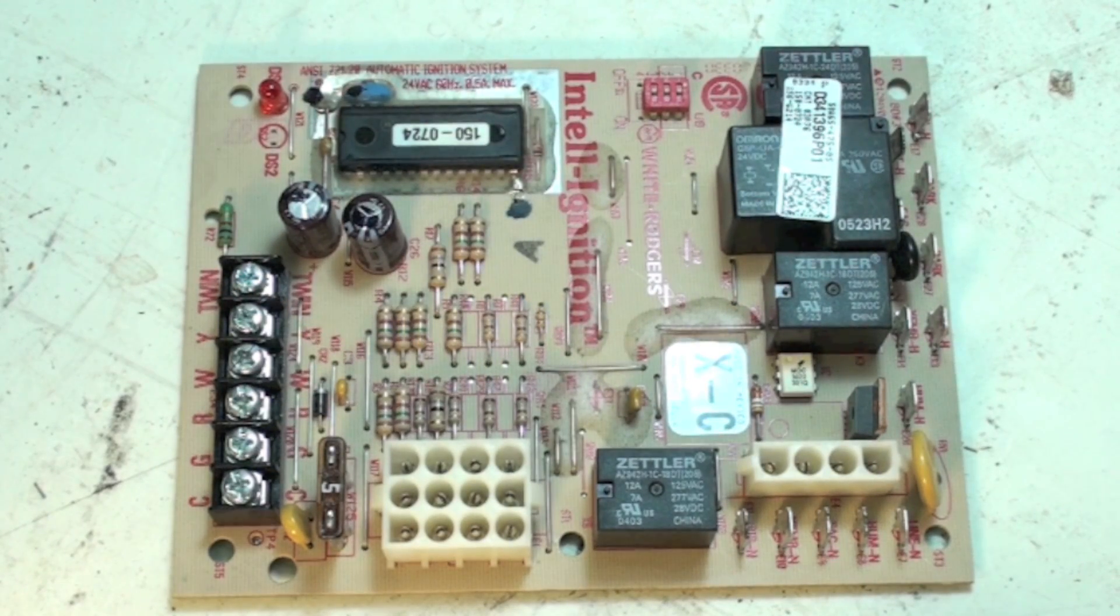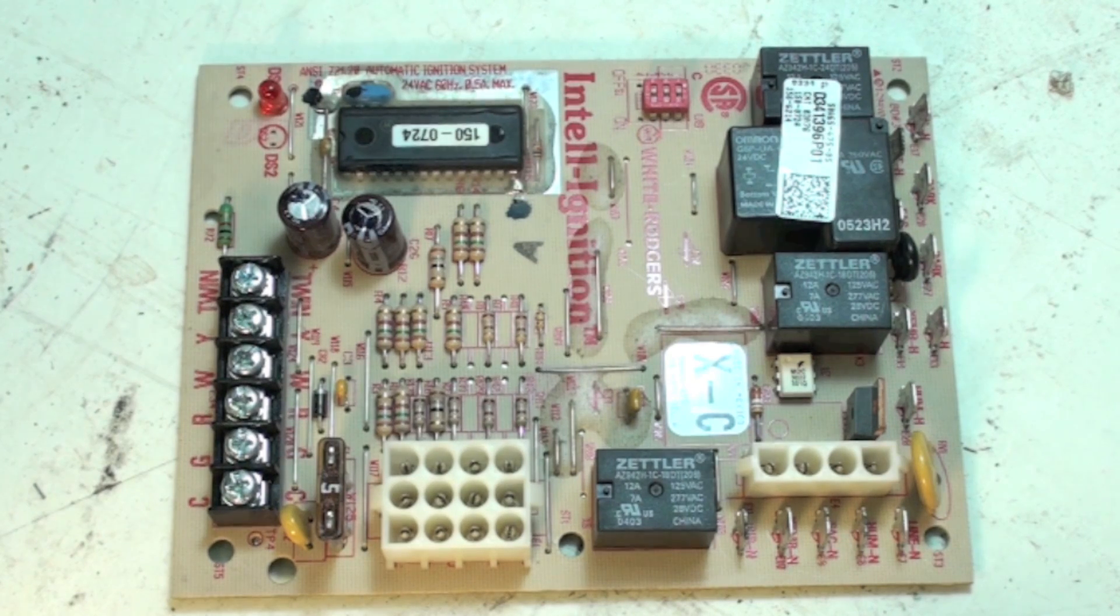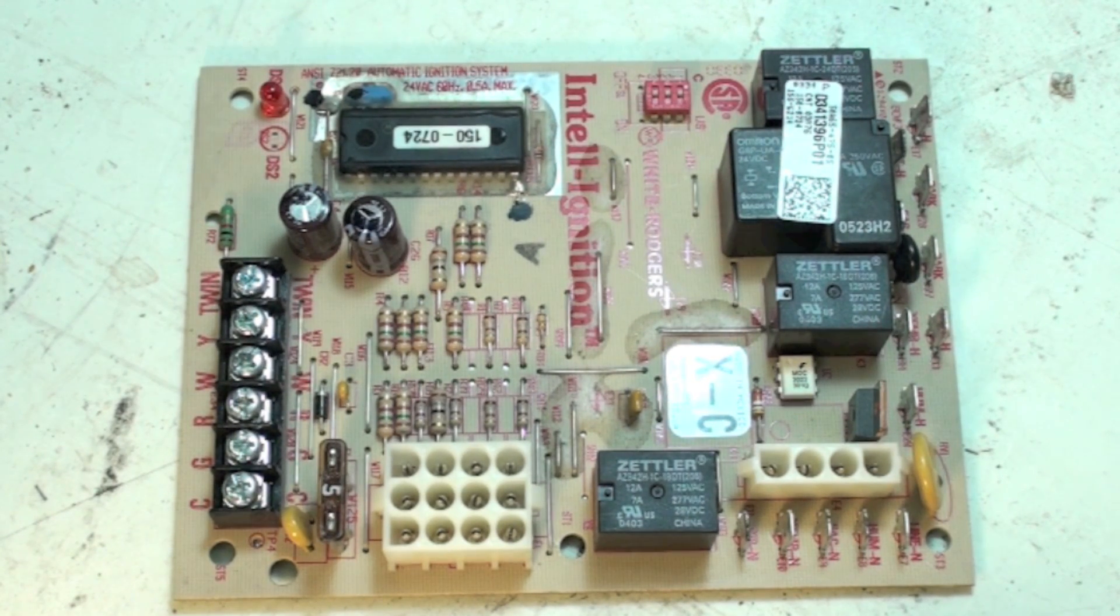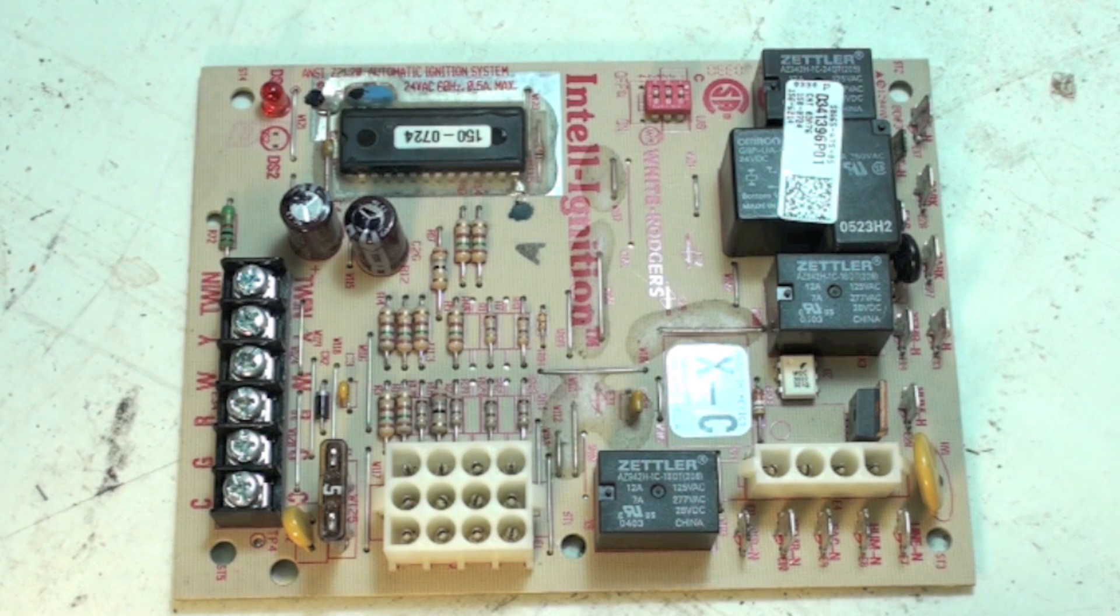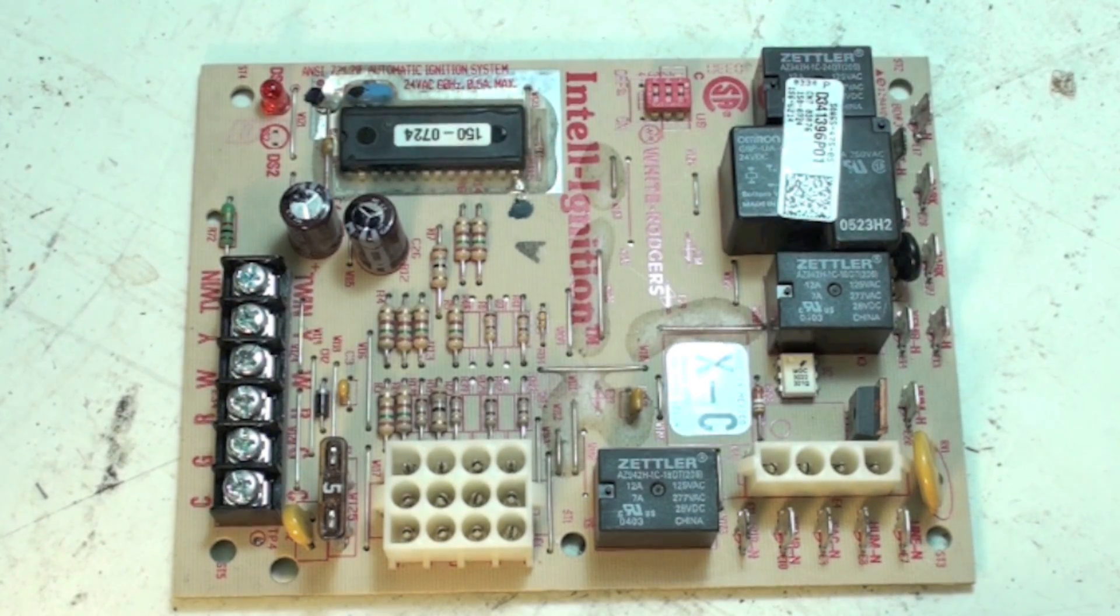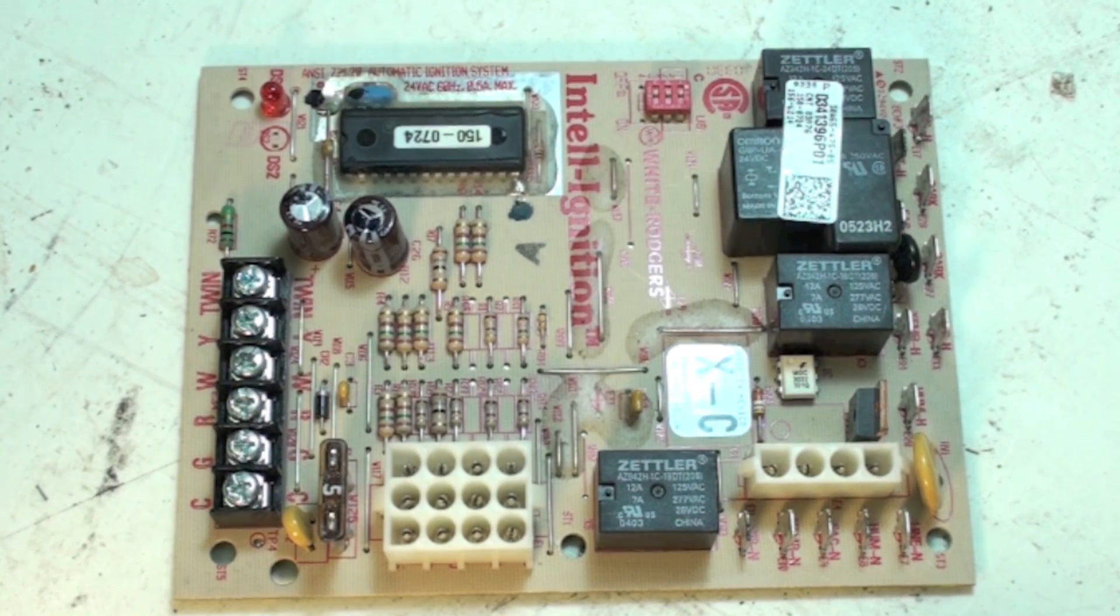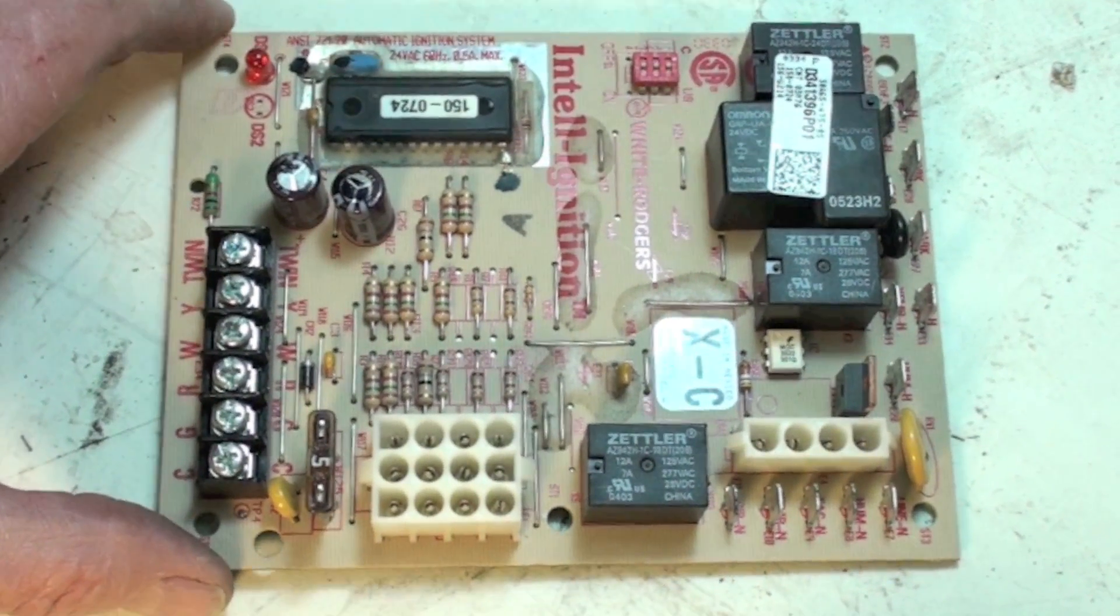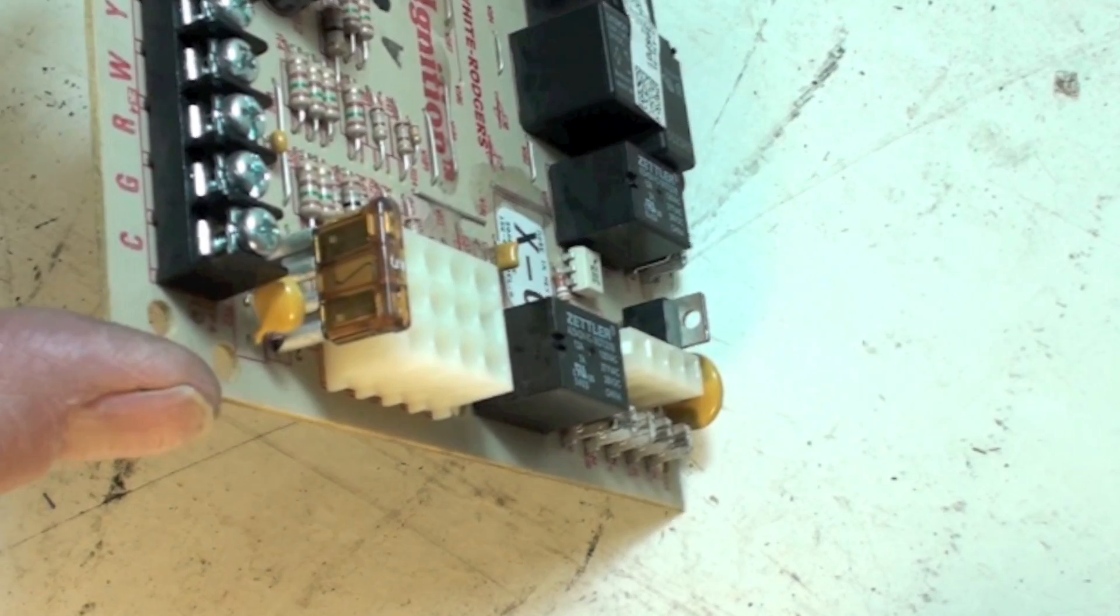Here we have a control board out of a gas furnace. Could be called a control board, could be called an IFC for integrated furnace control, brain board, whatever they want to call it. Usually I call them an IFC for integrated furnace control. Thermostat wires hook here, and what we're really interested in today is this part.